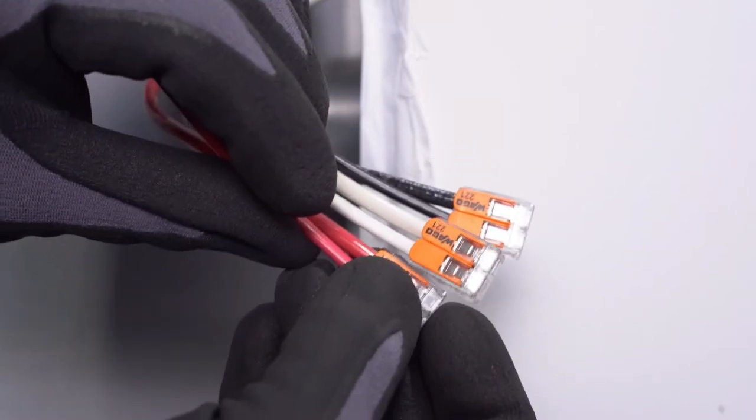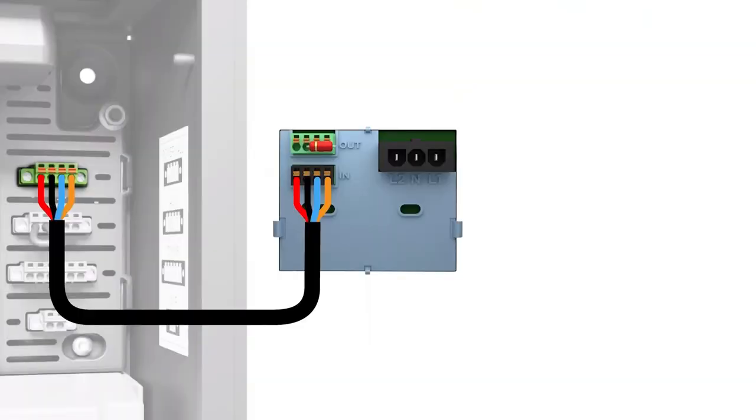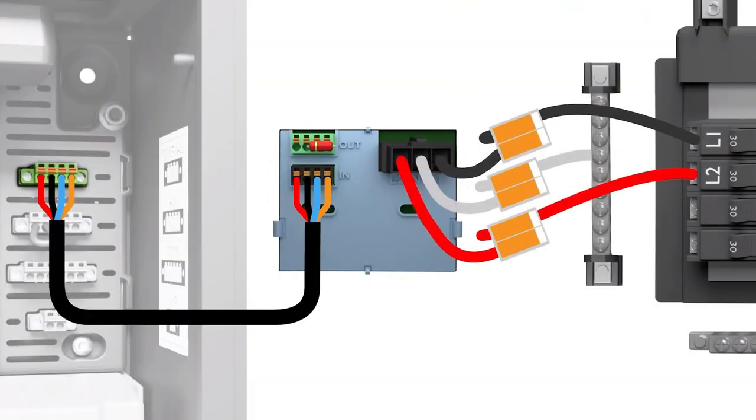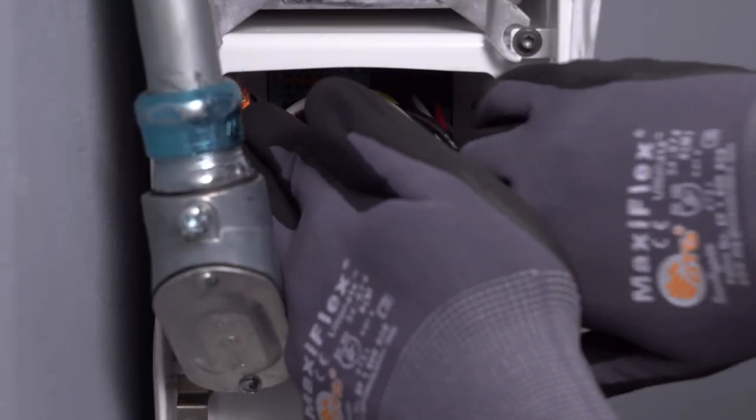Use the provided WAGO lever nuts to connect these conductors to the corresponding leads on the AC power harness. Plug the AC harness into the AC port inside the wiring compartment. Listen for an audible click. Make sure to give each wire a tug to test the connections.